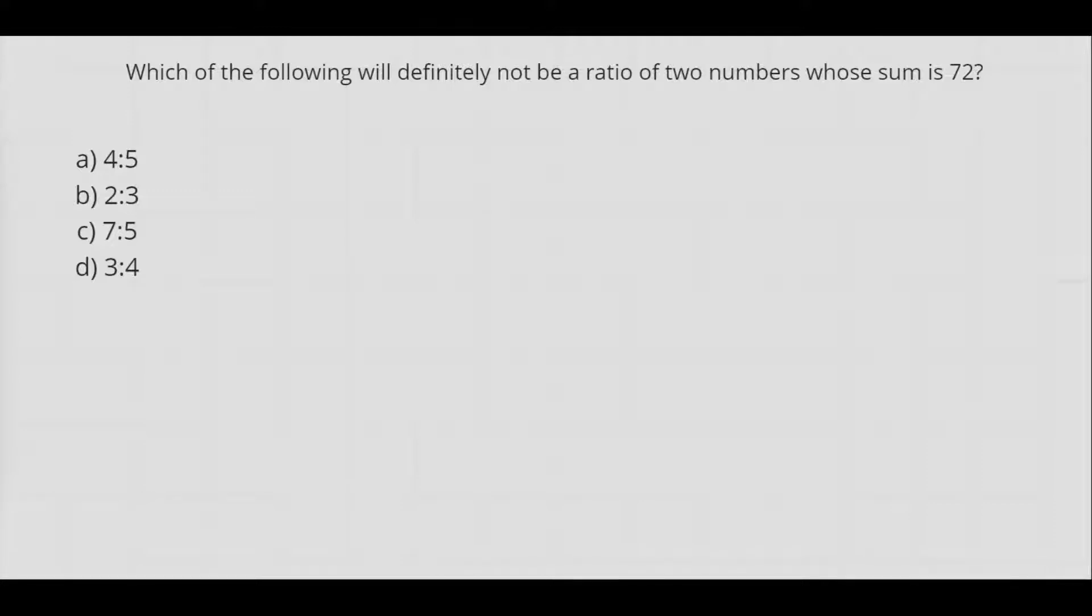Let's assume the ratios are in the most simplified form. By simplified form I mean if the ratio is a is to b, then a and b have no common factor other than one. Basically gcd of a comma b is equals to one.